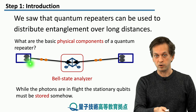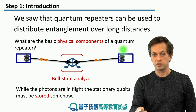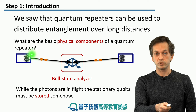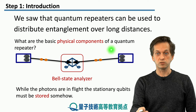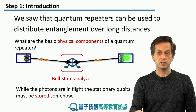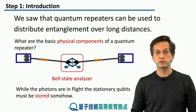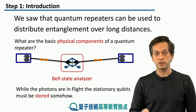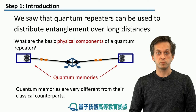But while the photons are in flight and traveling towards our bell state analyzer, these qubits are stored in the nodes — they are stationary, they are not moving anywhere. So we must have some physical means of storing these qubits, and we do that with the help of quantum memories.